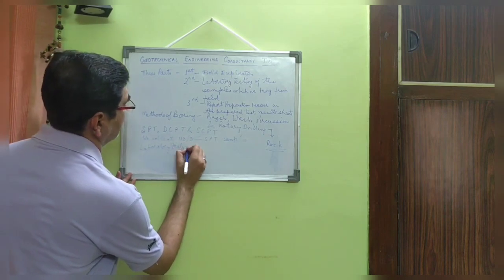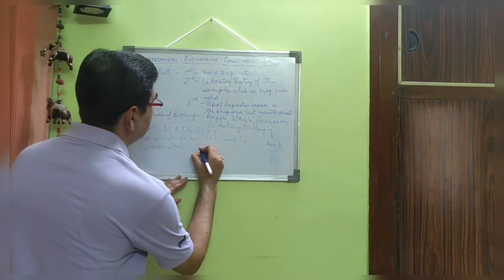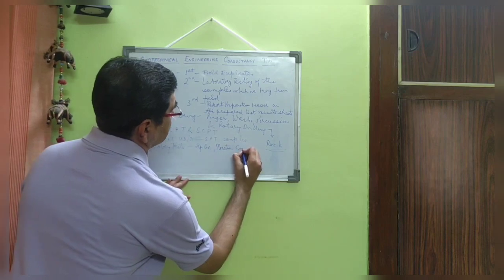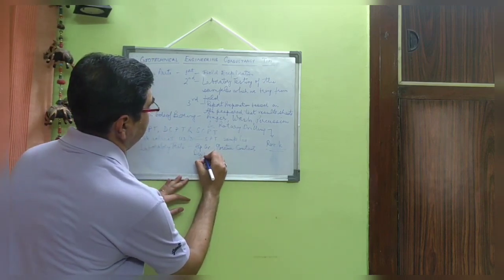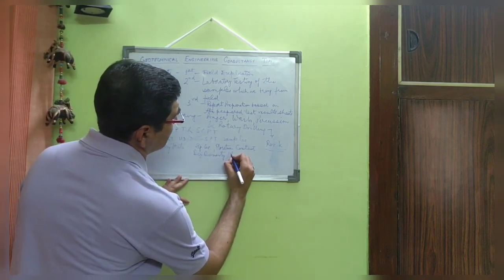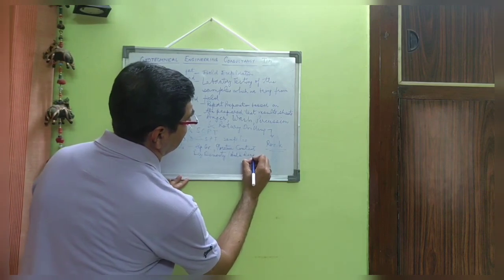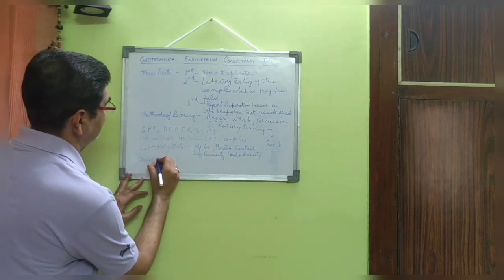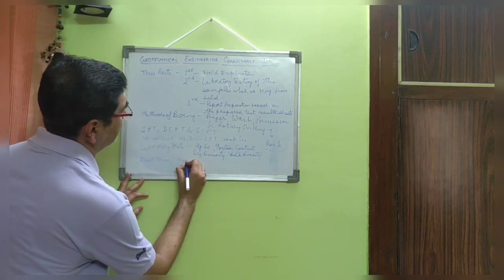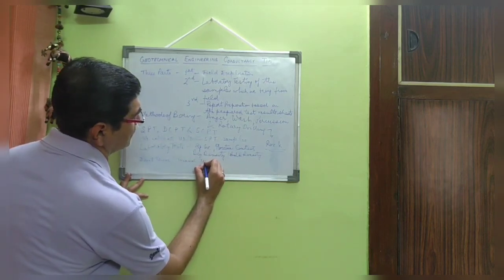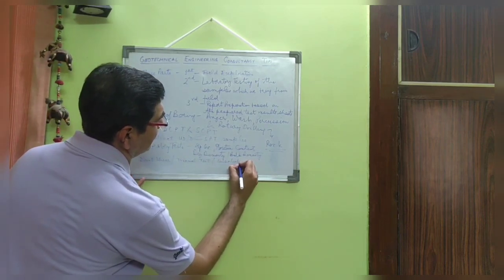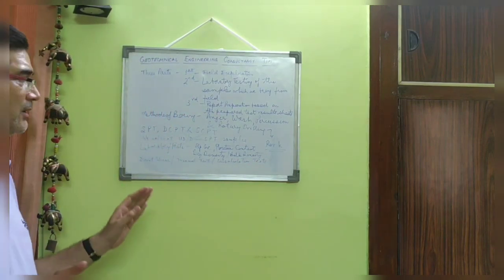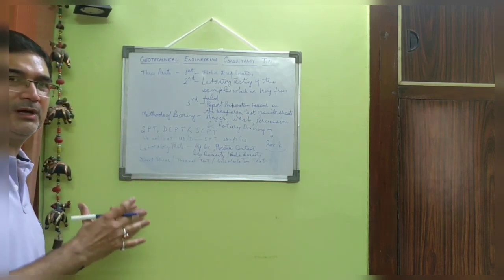Now, after bringing these samples to the laboratory, we do perform certain laboratory tests which form the part of the report. What are these tests? These are specific gravity, moisture content, dry density, bulk density, which are the basic tests. But after that, we do perform direct shear test,